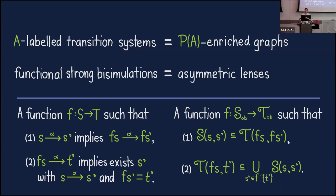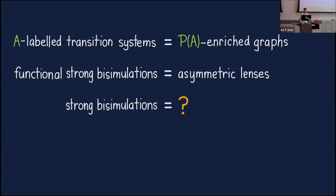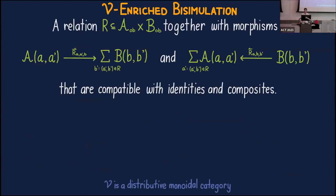The functional strong bisimulations of a labeled transition system are the same thing as asymmetric lenses between these power-set-of-A enriched graphs. If you compare the two definitions, you can do some pattern matching to see how this correspondence works: we have a function between the object sets and conditions that correspond. So the natural question is: if we drop the functional condition, what are arbitrary strong bisimulations in the enriched setting? That's what I'm here to tell you about today.